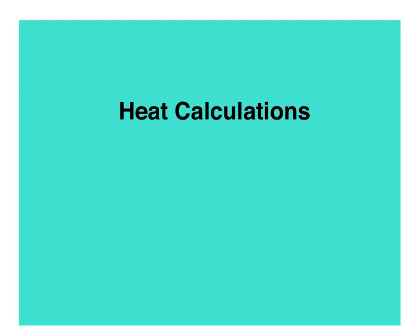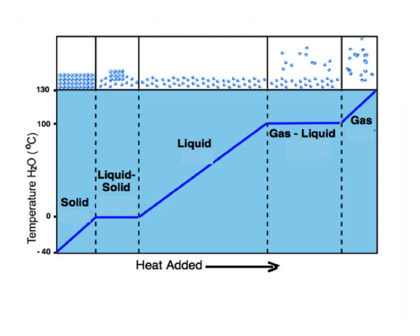In this lesson, we're going to talk about how to calculate heat for phase changes and temperature changes. Remember, with this heating curve, we have three temperature changes and two phase changes. We will have an equation that we'll use for temperature changes and an equation that we'll use for phase changes, and you can also apply these to cooling curves.